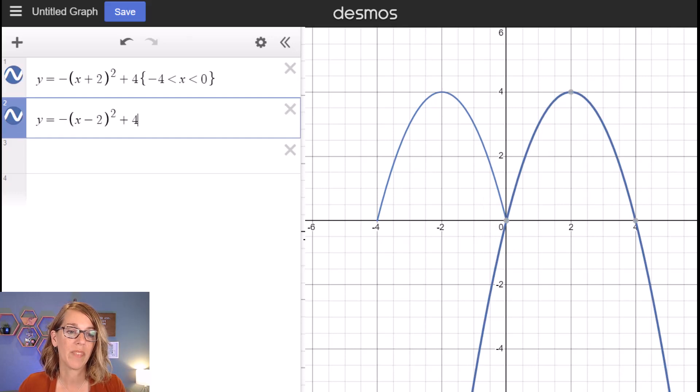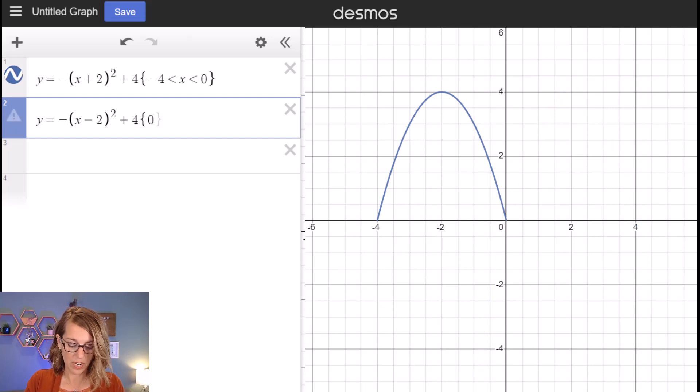Let's go ahead and do the same thing for the second one. Again I want those curly brackets and I want now from zero. So zero is the lowest less than x less than four.